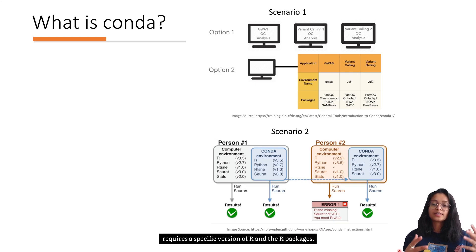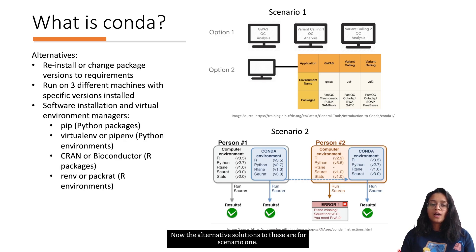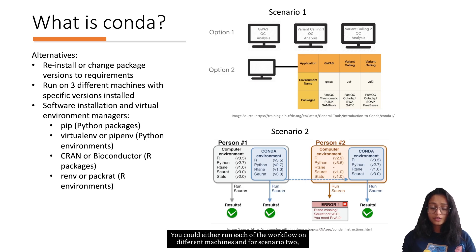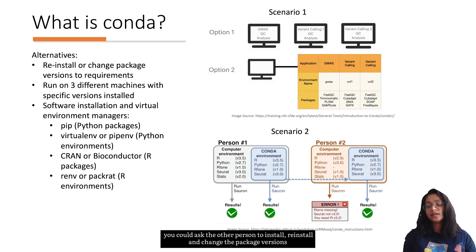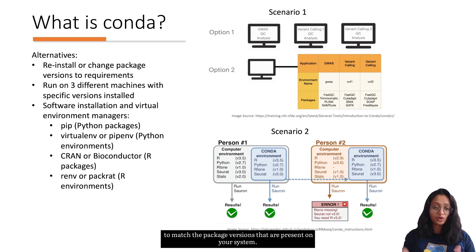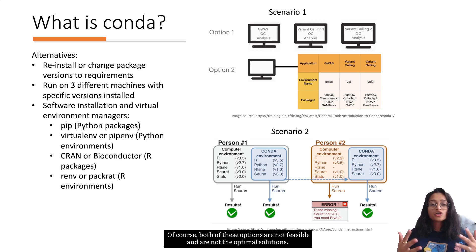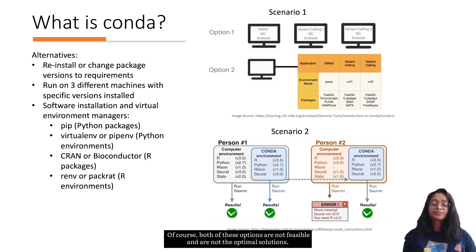The pipeline fails on the other person's system because it requires a specific version of R and the R packages. The alternative solutions are: for scenario one, run each workflow on different machines; and for scenario two, ask the other person to reinstall and change package versions to match the versions present on your system. Of course both of these options are not feasible and are not optimal solutions.